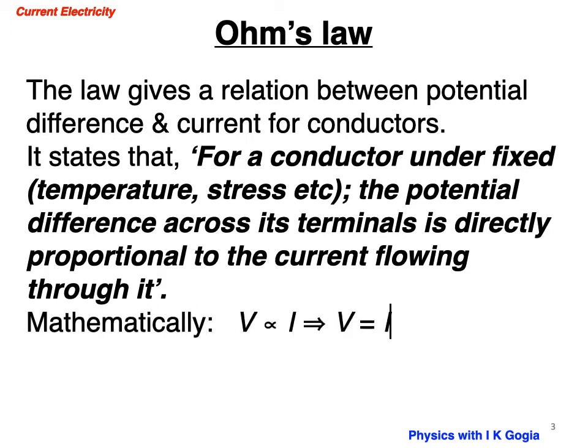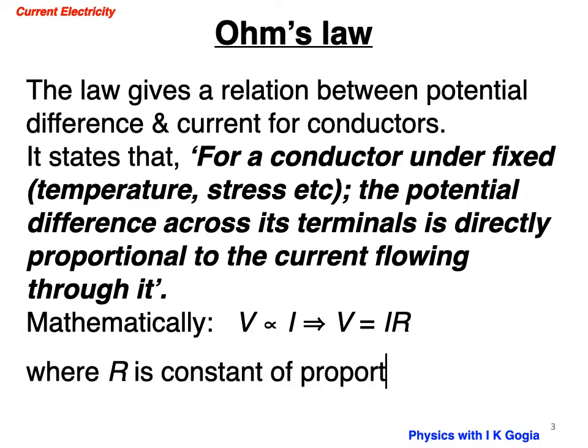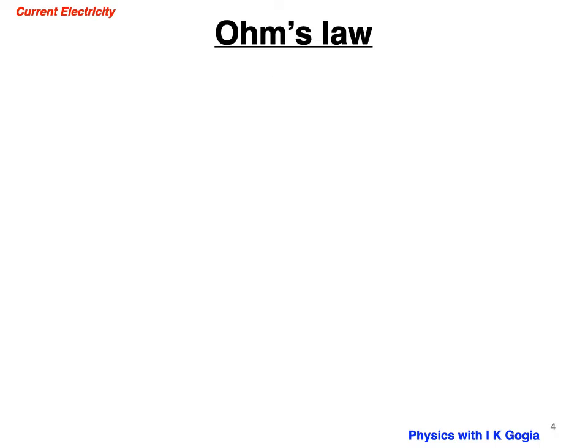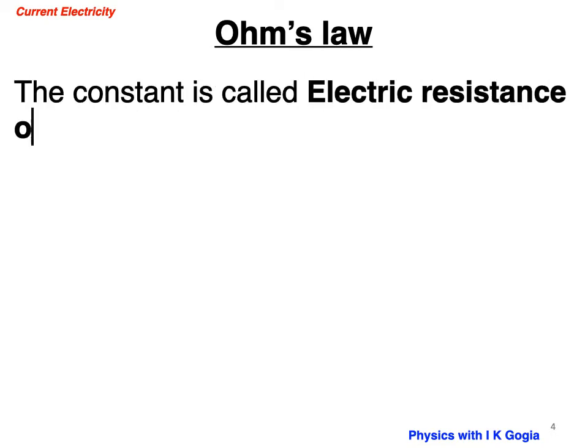Mathematically, we write V proportional to I or V equal to I into R, where R is a constant of proportionality introduced in place of proportionality. The constant is called electrical resistance of the conductor.